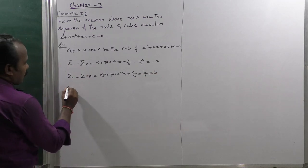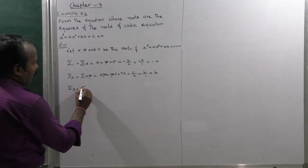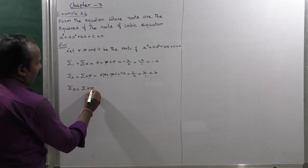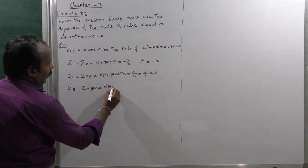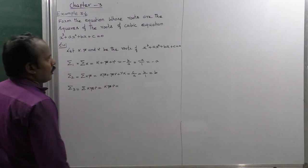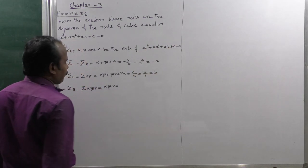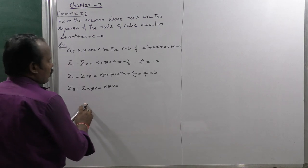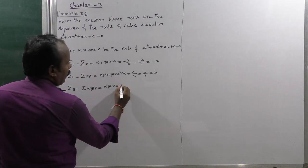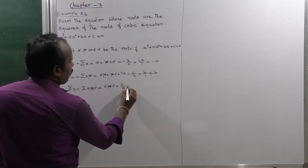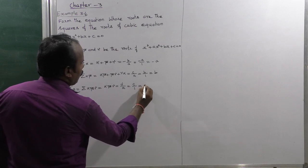Summation 3: alpha·beta·gamma equals minus d divided by a. Here d means c and a is 1, so alpha·beta·gamma equals minus c divided by 1, which equals minus c.